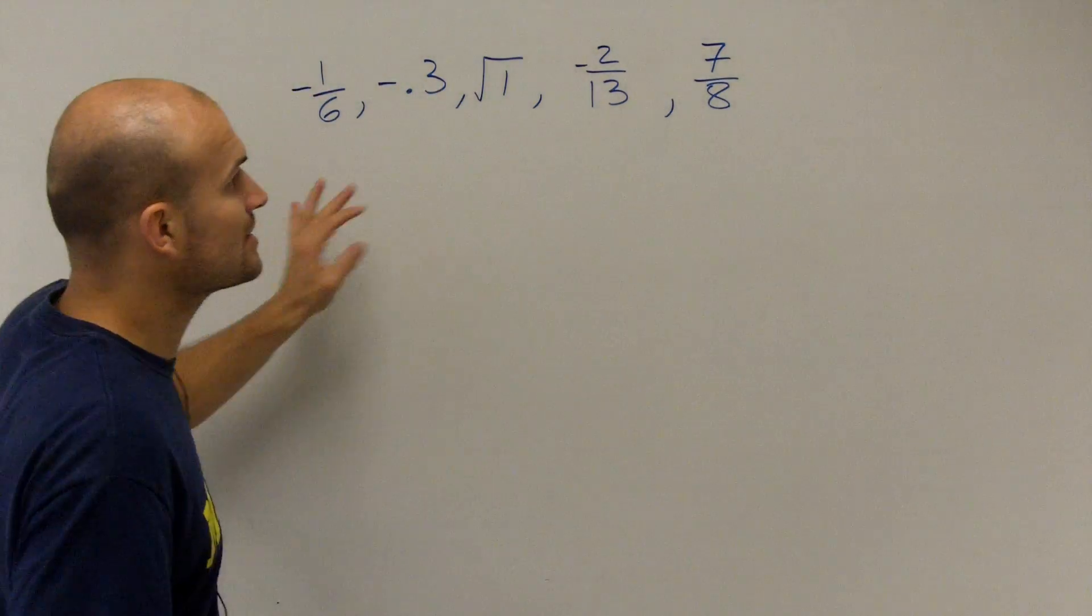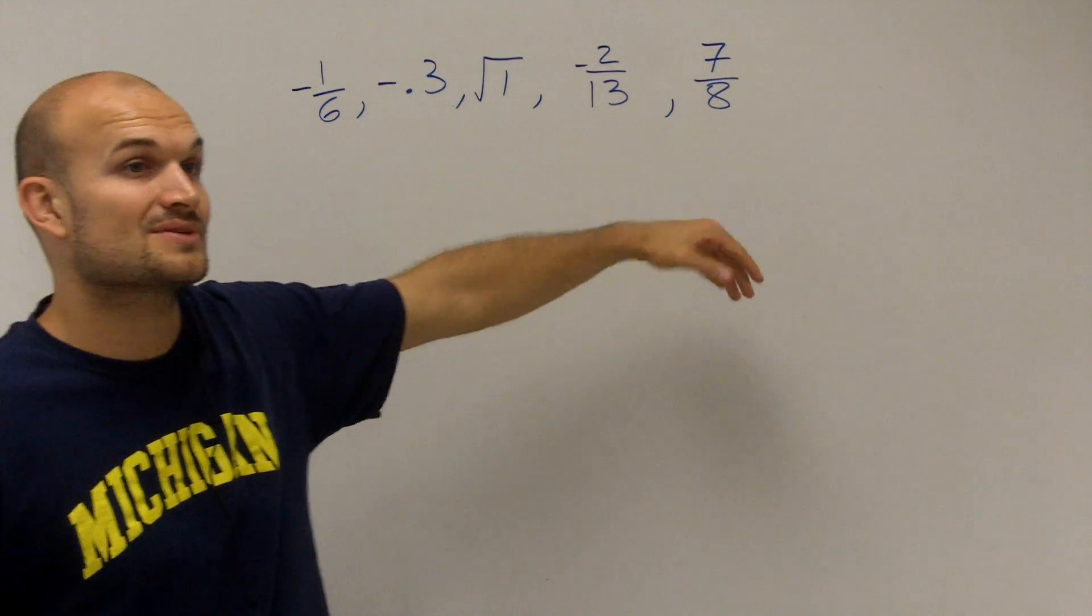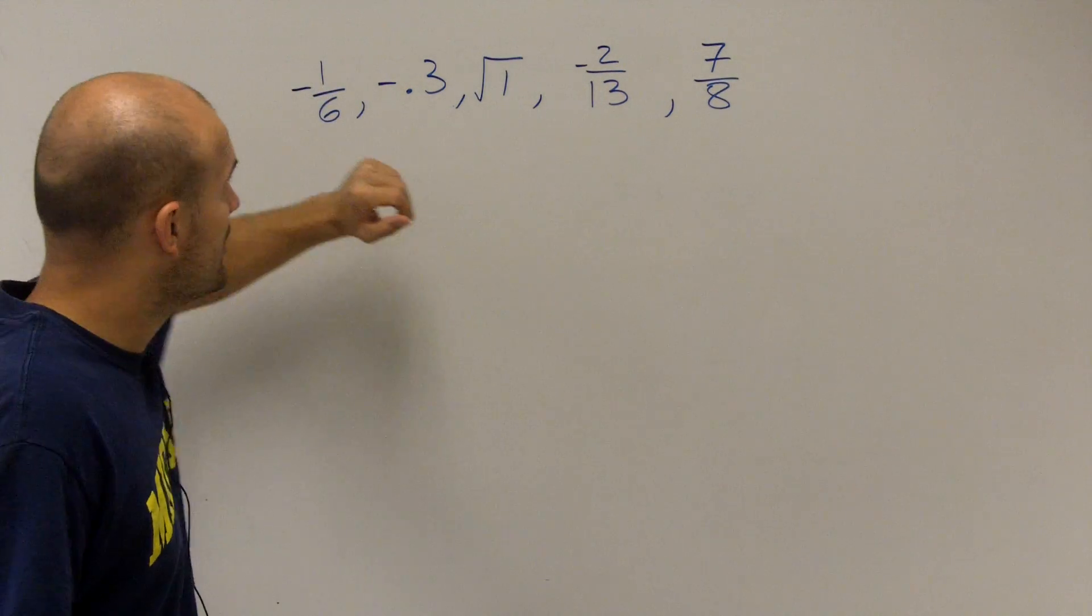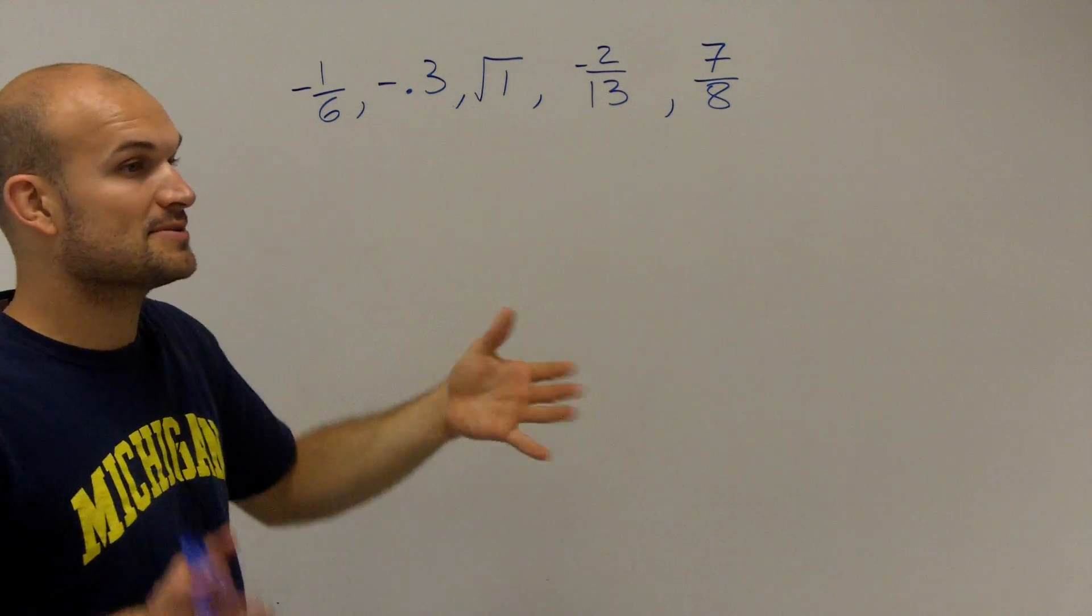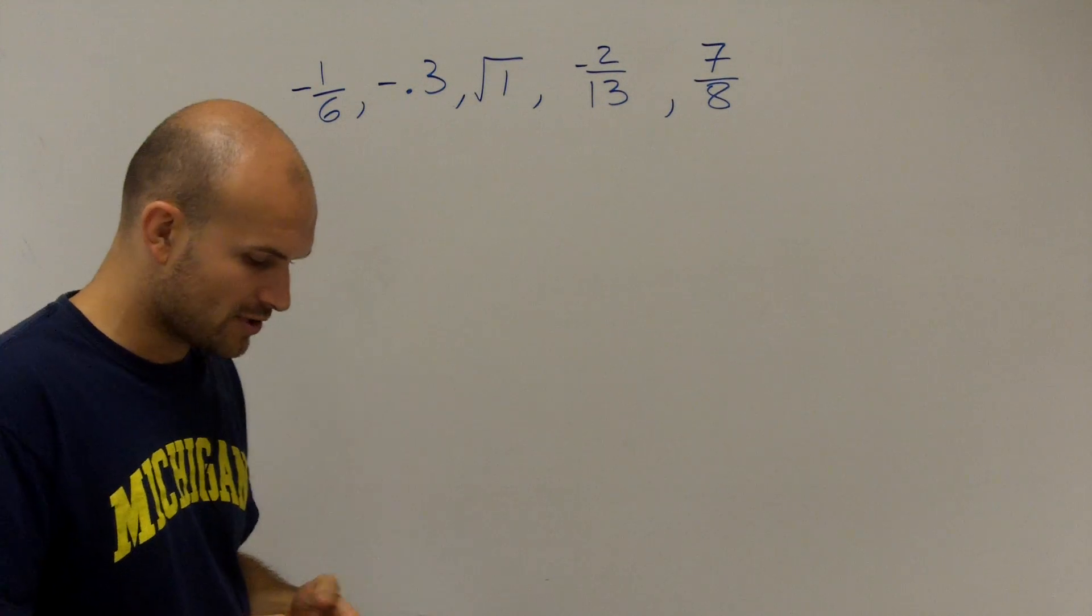Now, we don't need to get the exact decimals, because I know some of these are going to have some pretty long decimals, if not repeating. But we just need to approximate here, unless we have some two decimals that are very close together, then we can get a little more exact.